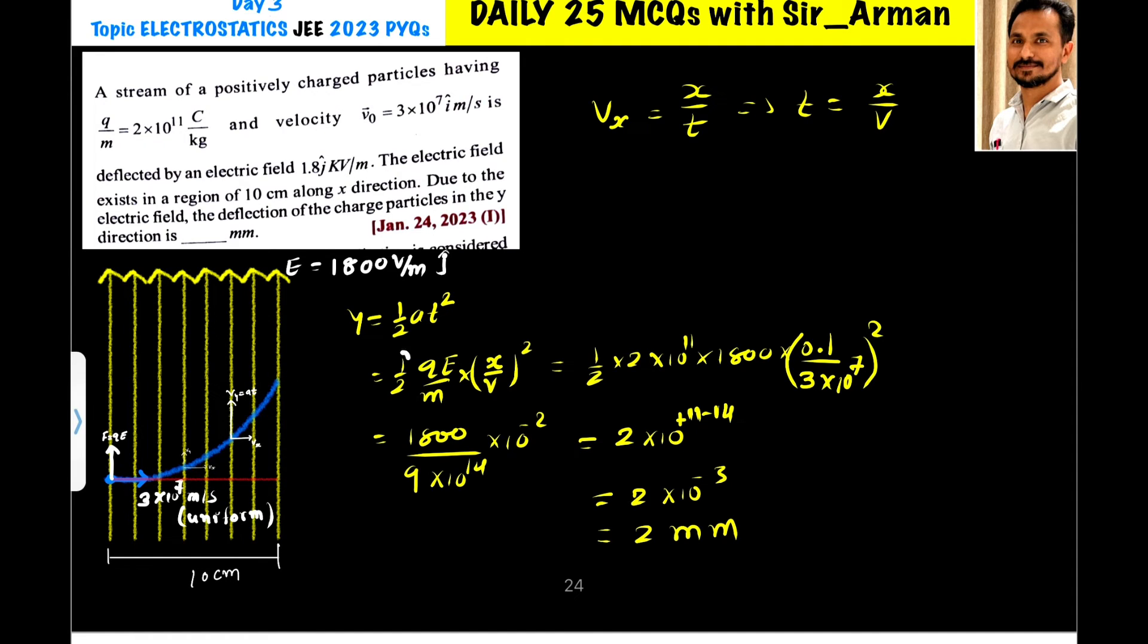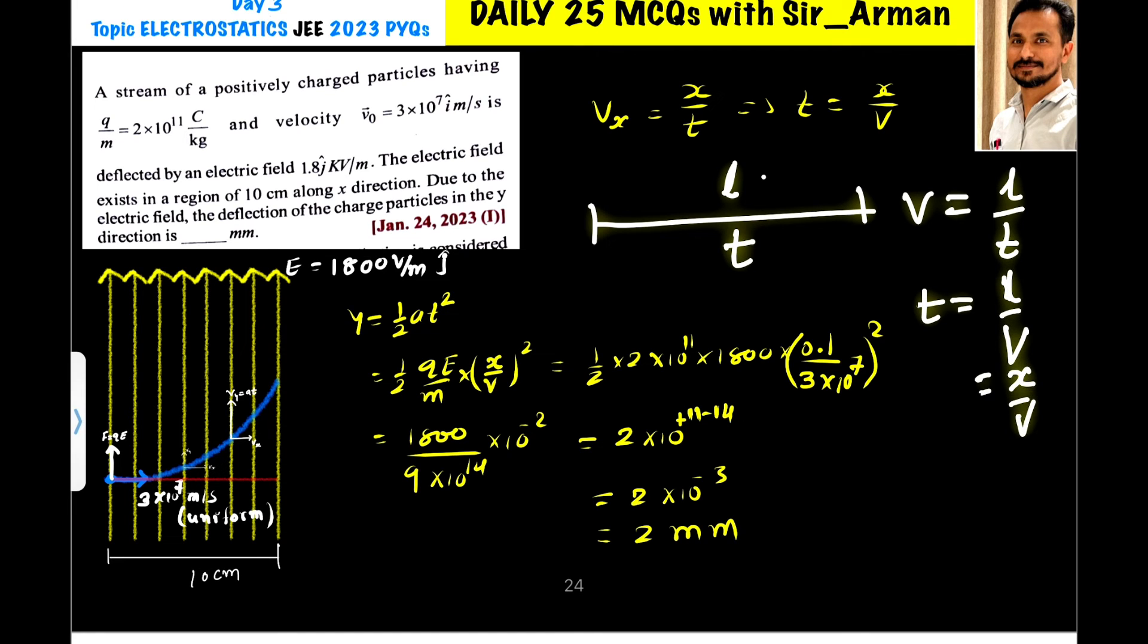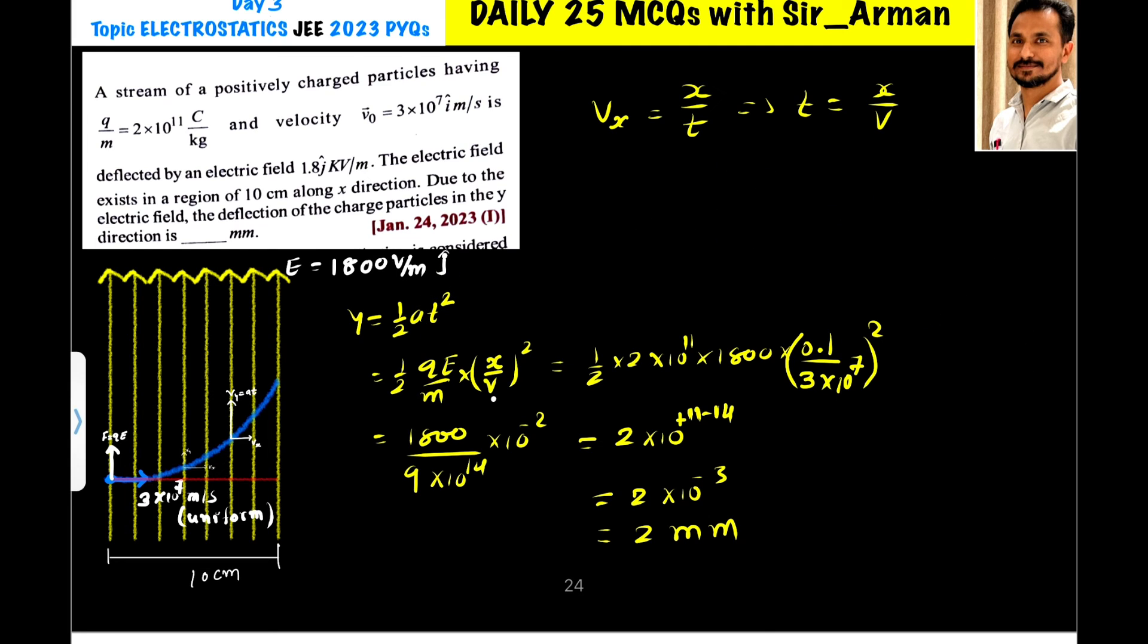So half then this a is qE by m and when it covers x distance in time t covering length l then we can write velocity is equals to l by t. So if you make t as a subject we can get l by v or we can write x by v. This l is equals to x. So instead of t I have written x by v. So t square is x by v square.